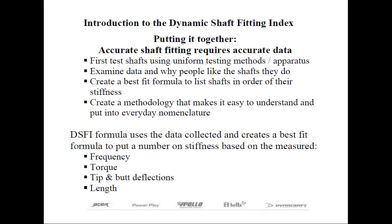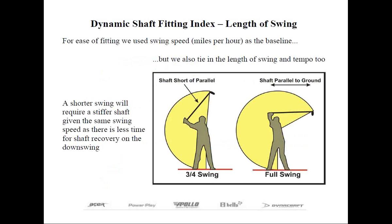For the ease of fitting in our system, we selected to use swing speed as our baseline. For example, a shaft may have a DSFI number or rating of 85. However, the DSFI is not an absolute measure, so the shaft doesn't work best only for a golfer that swings 85 miles an hour — this is simply our starting point. There are other factors one has to look at, one of which is the length of the golfer's swing.